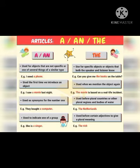A and AN are used for objects that are not specific, or one of several things of a similar type. When we talk about one common, non-specific thing, we use A or AN. For example: 'I need a phone' — here we are talking about any phone in general. 'I saw a movie last night' — we are talking about a movie we watched, referring to it as an individual item among many.